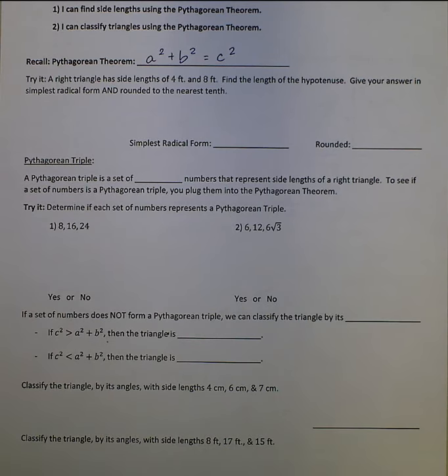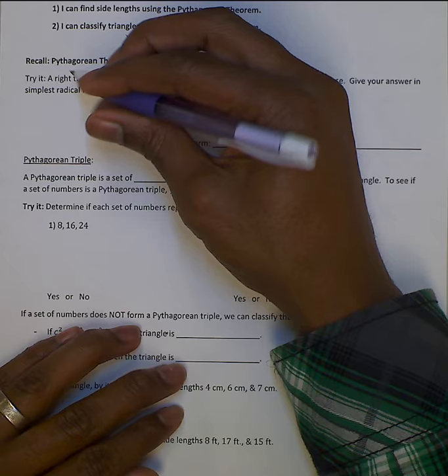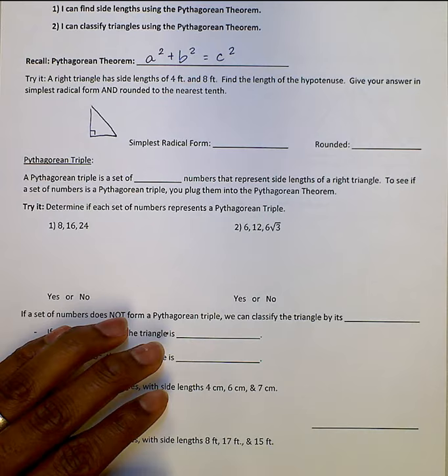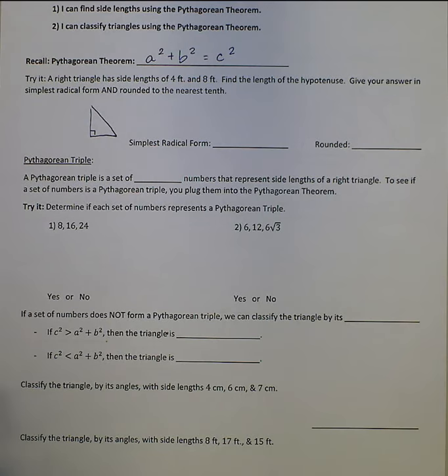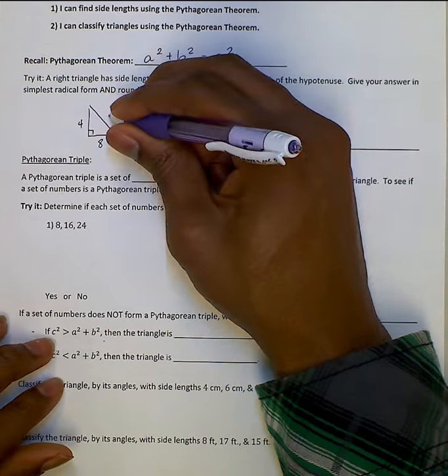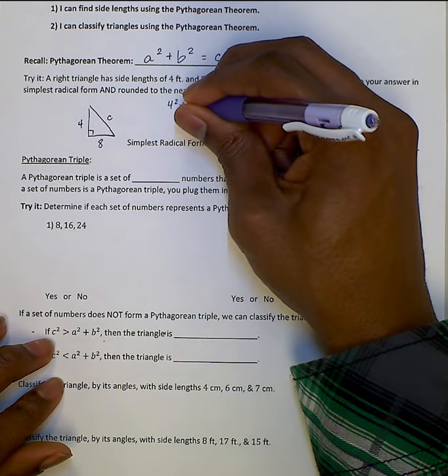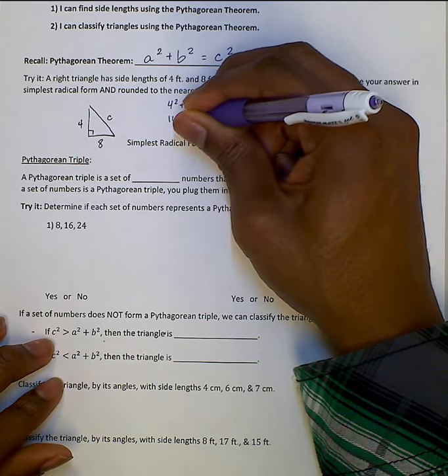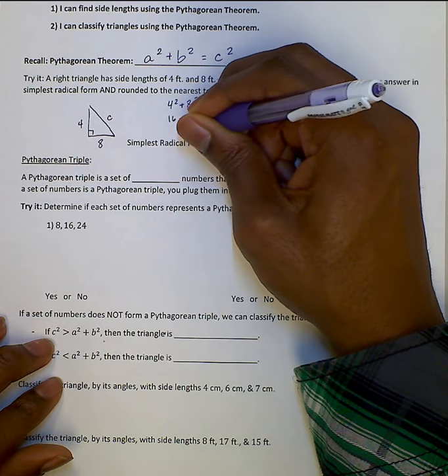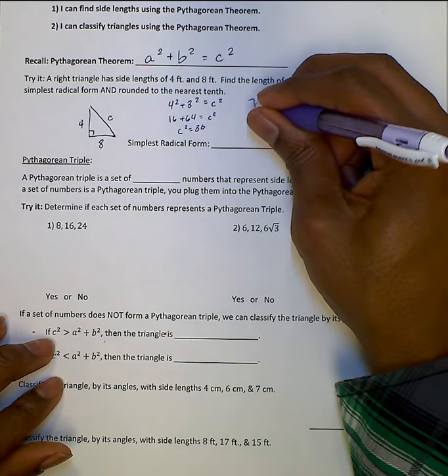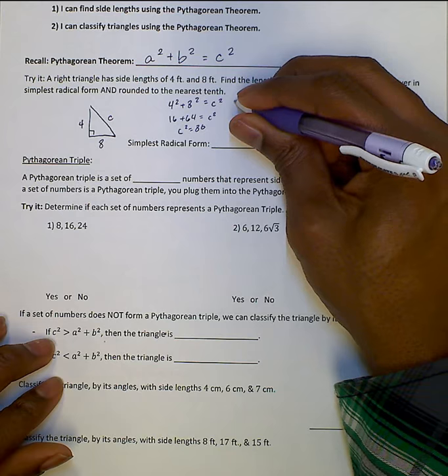Let's try it. A right triangle has side lengths of 4 feet and 8 feet. You want us to find the length of the hypotenuse. Give your answer in simplest radical form and round it to the nearest tenth. So we have 4, we have 8, it doesn't matter which side we call it. 4 squared plus 8 squared equals C squared.